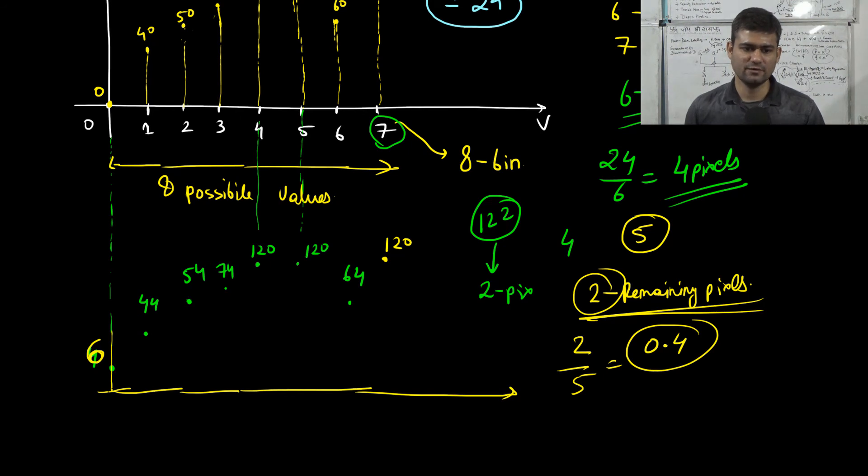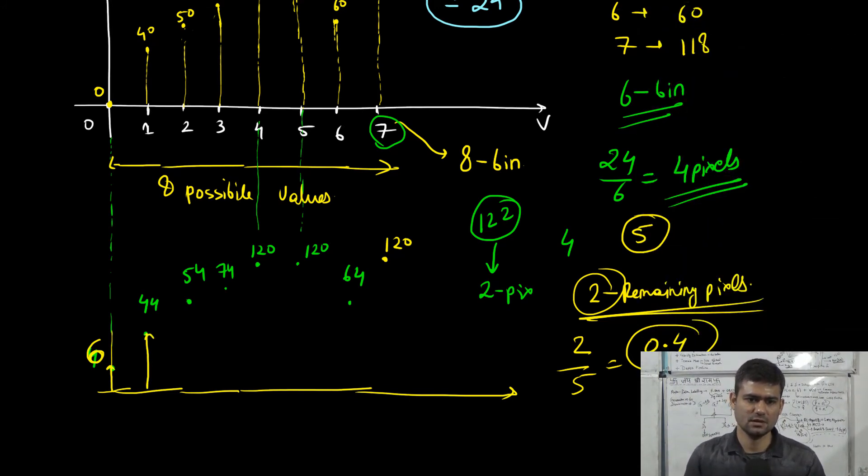We went from 0 to 6, from 40 to 44, from 50 to 54, from 70 to 74. This one went from 128 to 120, 136 to 120, 60 to 64, and this one went from 118 to 120, which is our clip limit.